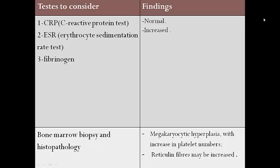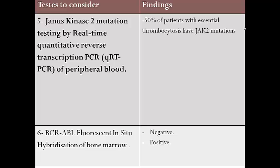Bone marrow biopsy is indicated if thrombocytosis is evident in blood count with no secondary cause to explain it. In thrombocytosis, there will be increased megakaryocytes and reticulin fibers may be increased. JAK2 mutation testing by real-time quantitative reverse transcription PCR of peripheral blood is also performed; if positive, it helps establish the diagnosis of myeloproliferative disorder — 50% of patients with essential thrombocytosis have JAK2 mutations. BCR-ABL fluorescence in situ hybridization of bone marrow will be negative for essential thrombocytosis but positive in chronic myeloid leukemia.